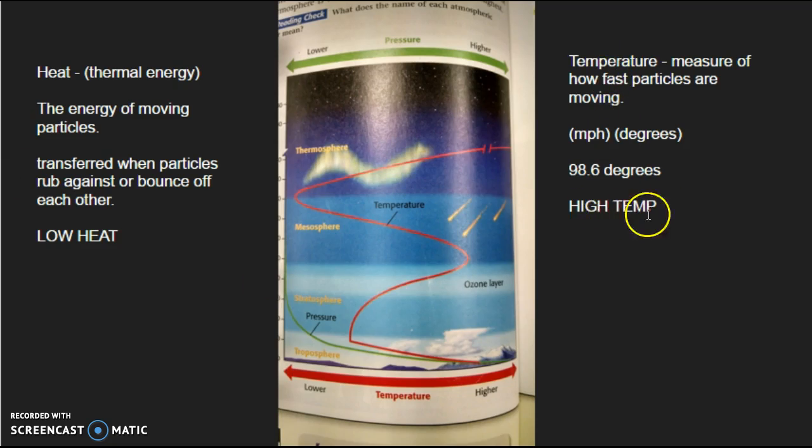So the thermosphere experiences high temperature because the particles are zooming very fast. But they're not bumping into each other, which means they give off very little amounts of thermal energy. So I hope this video helped to explain that. Watch this as many times as you need in order to really understand it and soak it in. But now you know why the thermosphere behaves the way it does.